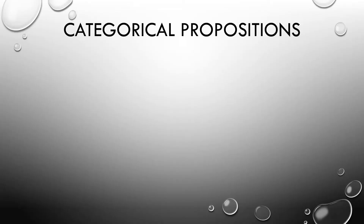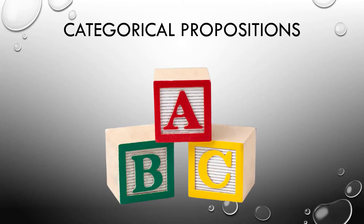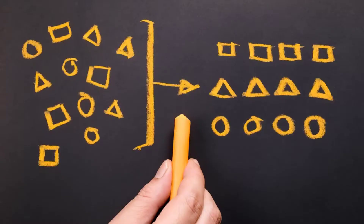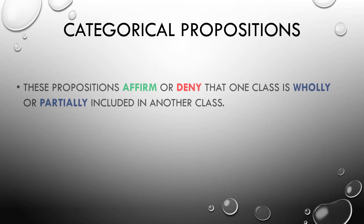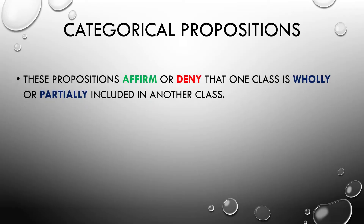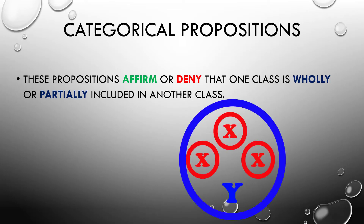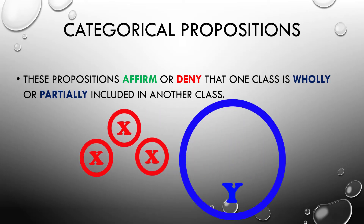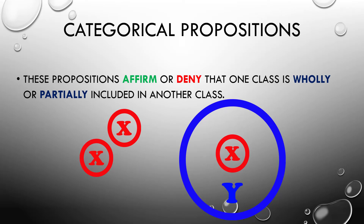Categorical propositions are the building blocks of the categorical syllogism. These are statements that can be analyzed as being about relationships among classes or categories of things. They affirm or deny that one class is wholly or partially included in another class — or we could say they include or exclude all, or some, of one category X in or from another category Y.